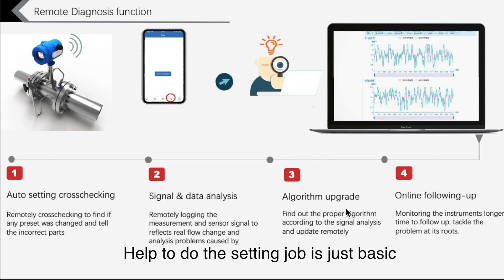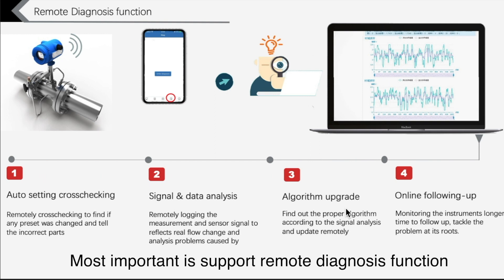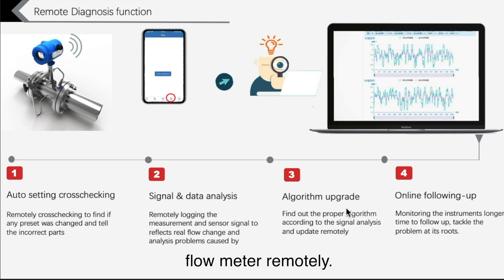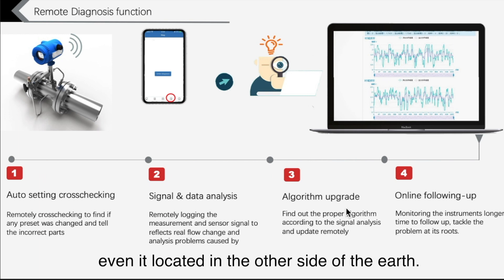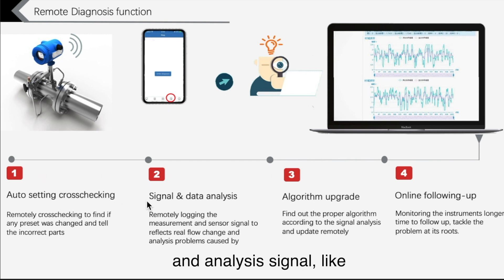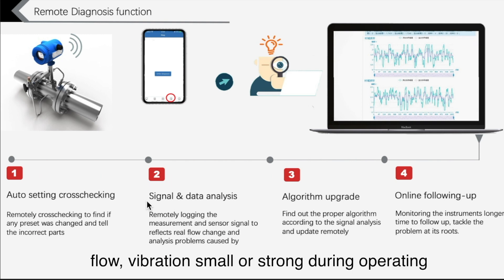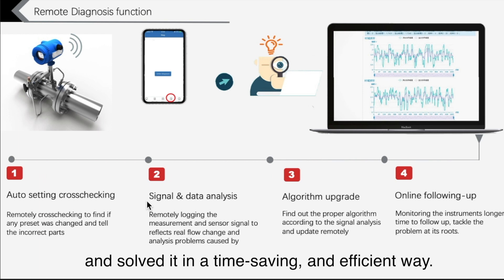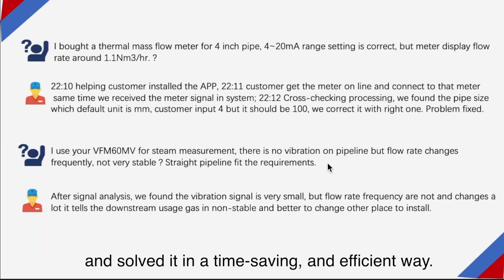This helps to adjust the basic functions of the Comet Flow Meter app. Most importantly, it supports a remote diagnosis function, which enables our team to access the flow meter remotely — even if it is located on the other side of the earth — to check for any wrong settings and to analyze signals like flow vibrations, whether they are small or strong during operation.